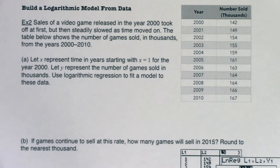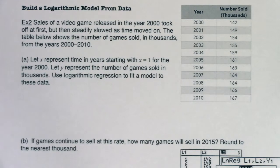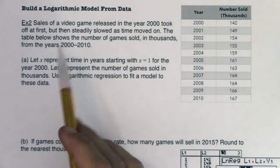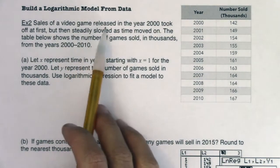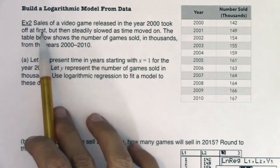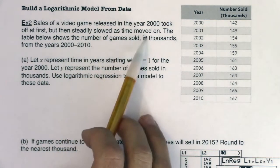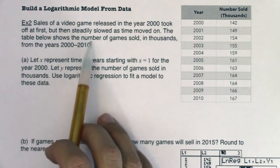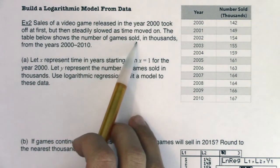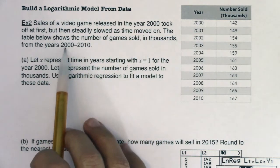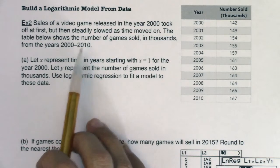Welcome to example two, where we're going to build a logarithmic model from data. Sales of a video game released in the year 2000 took off at first, but then steadily slowed as time moved on. The table below shows the numbers of games sold in thousands from the years 2000 to 2010.